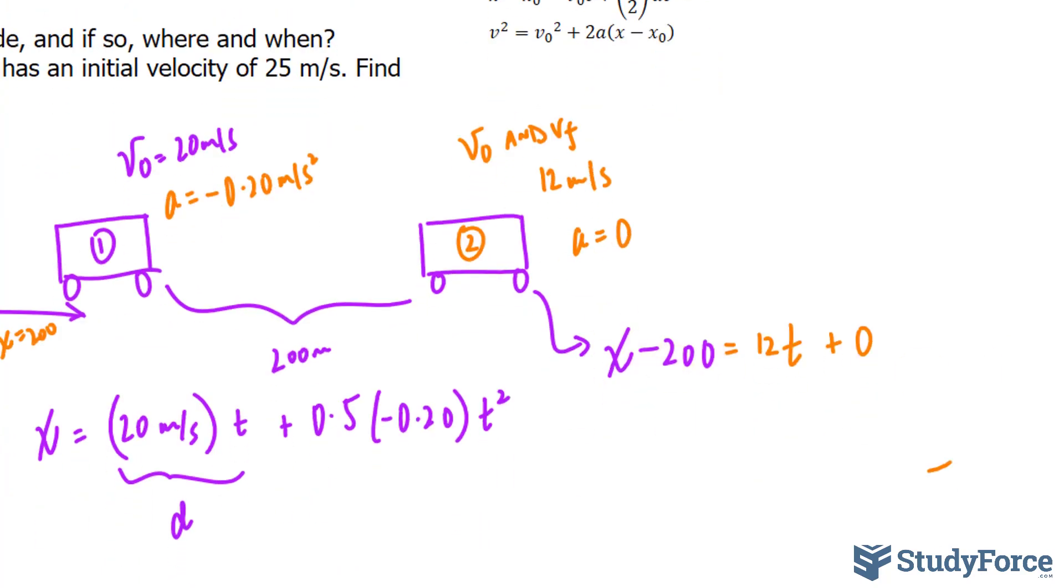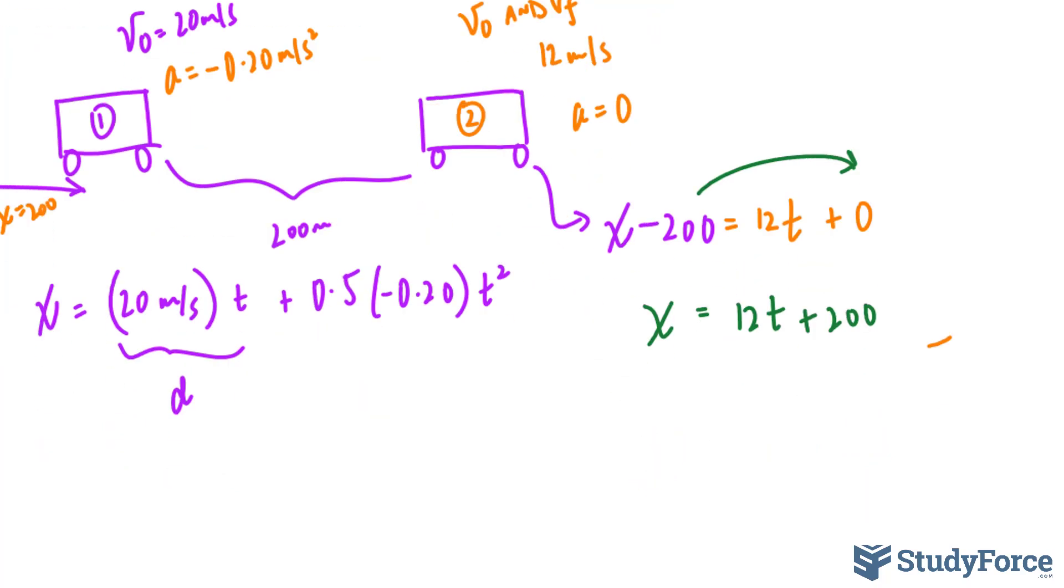If I rearrange for x, I get the following. I have x is equal to 12t plus 200. So this is the final distance of this train after t seconds, and this is the final distance of this train after t seconds.